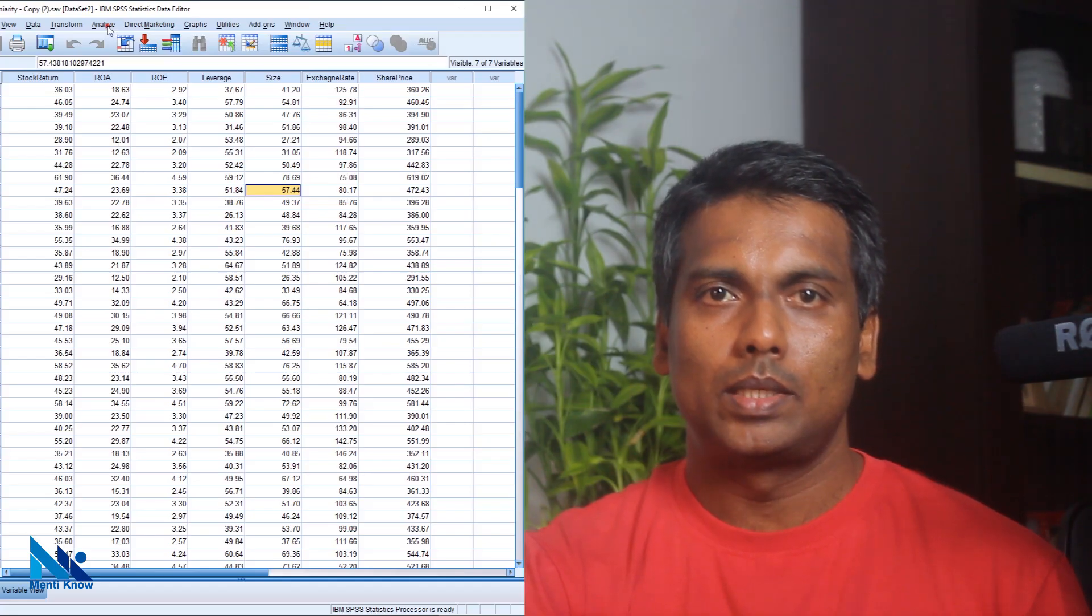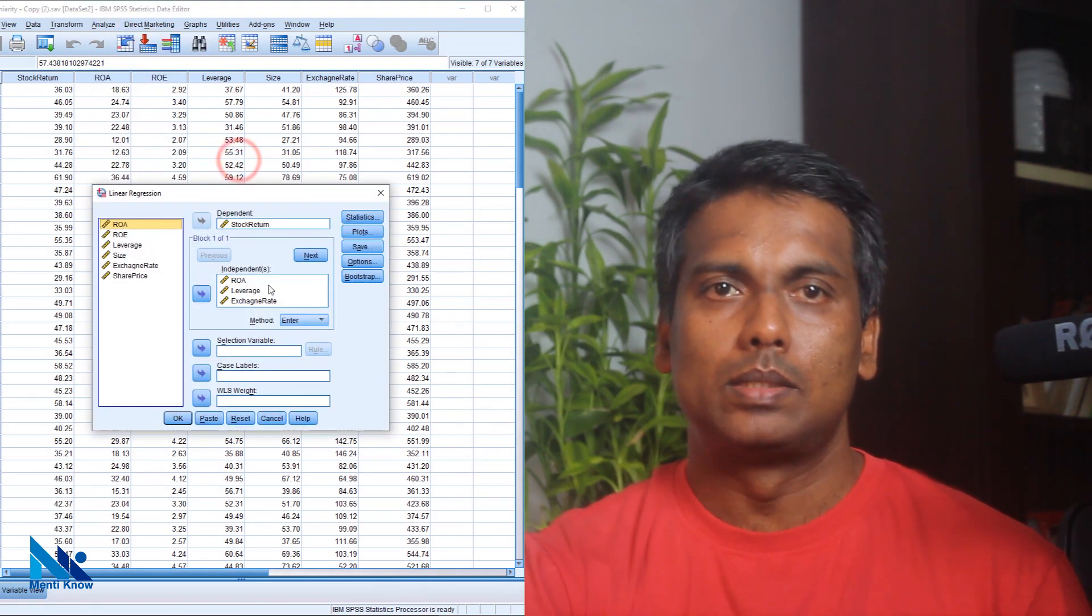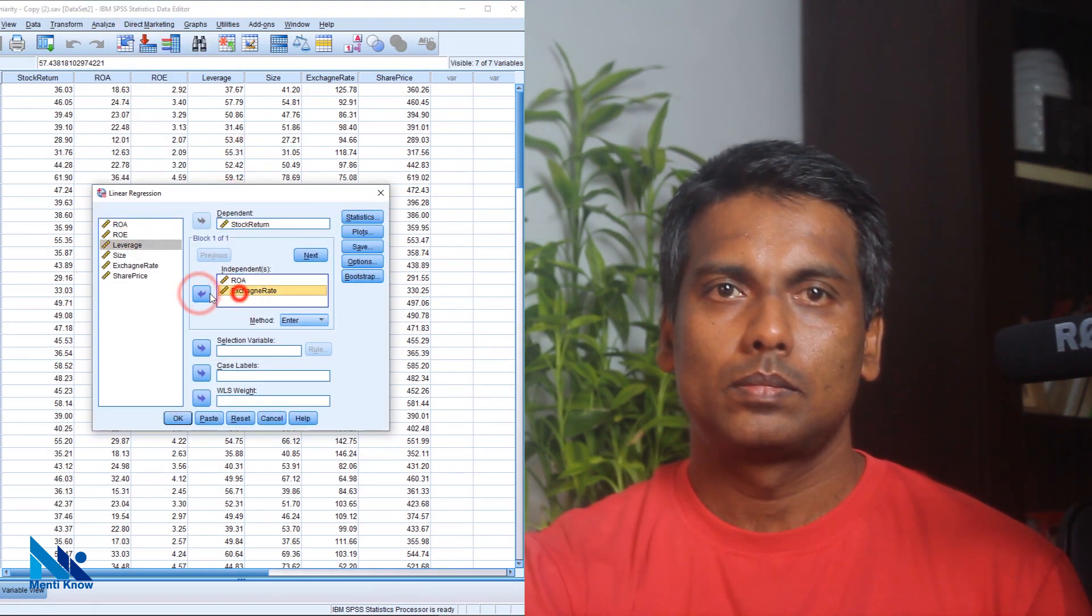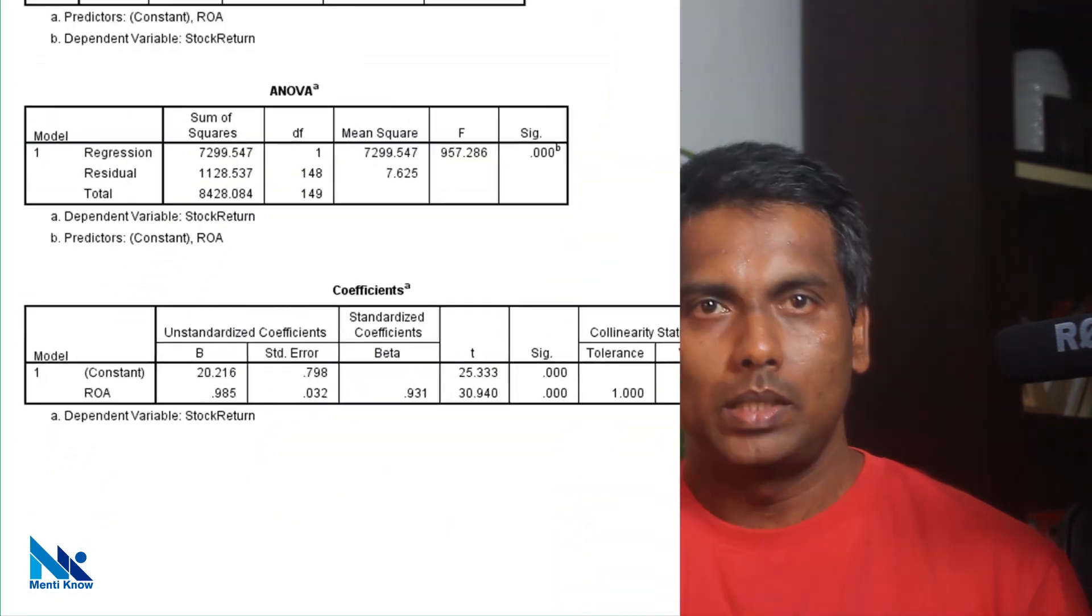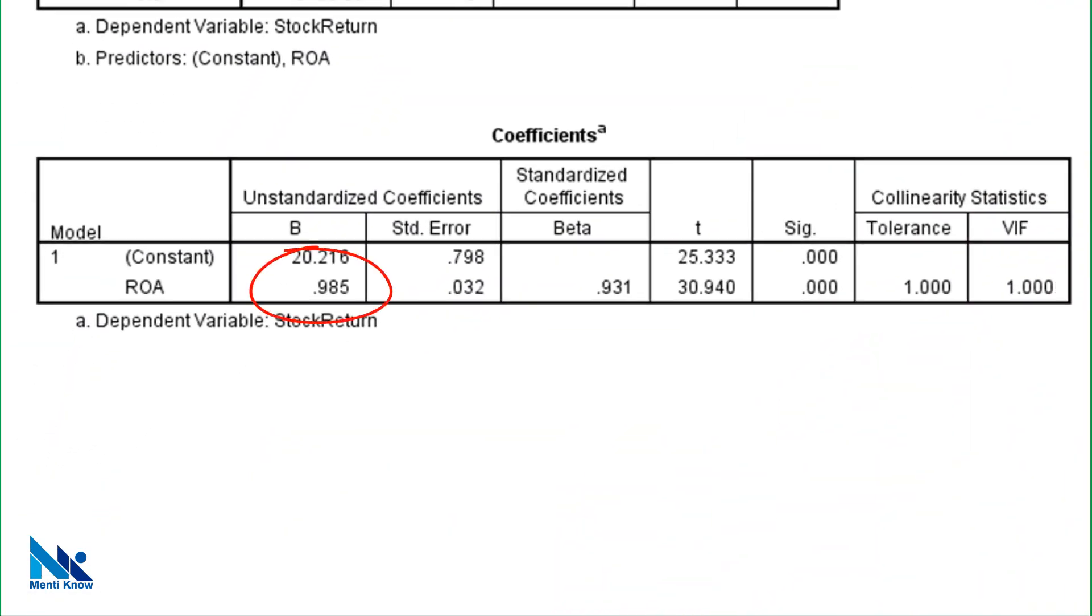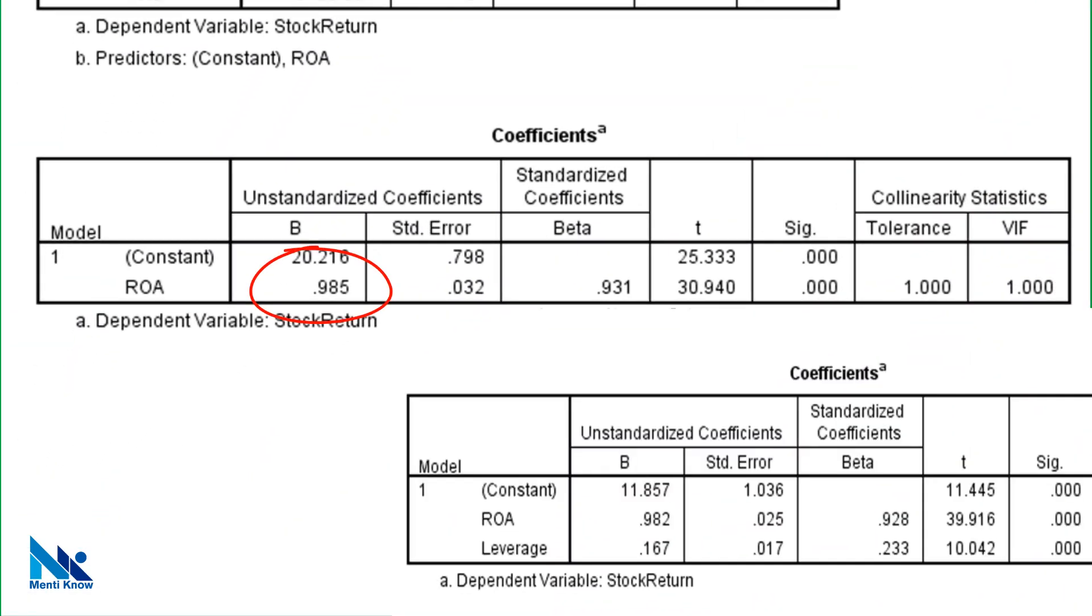For further verification, let's keep only ROA in the model this time. See, even when we change the model by dropping all other independent variables, the coefficient for ROA has not been changed.